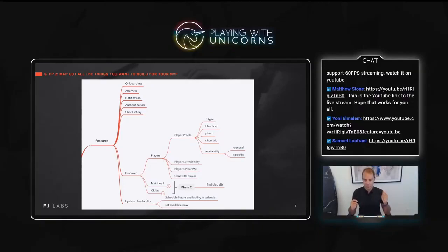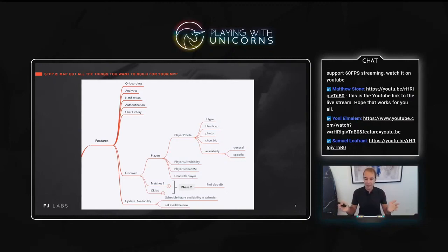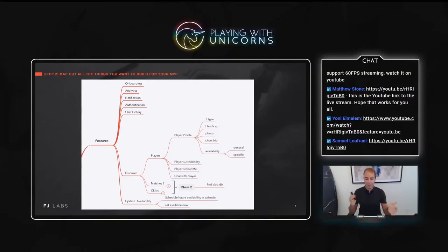For phase two, we decided we don't need a database of clubs or the ability to book clubs today, because that's offered in other apps and isn't needed to test the core idea. The core question was: can we find players at our level?